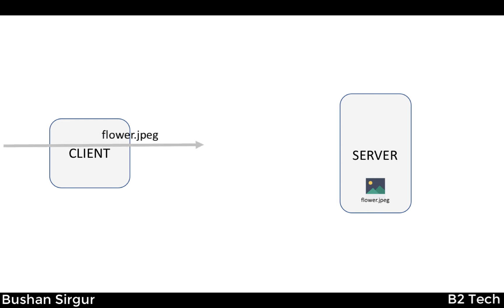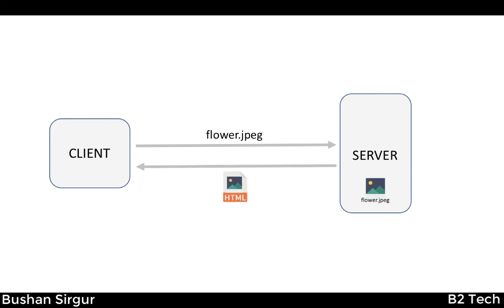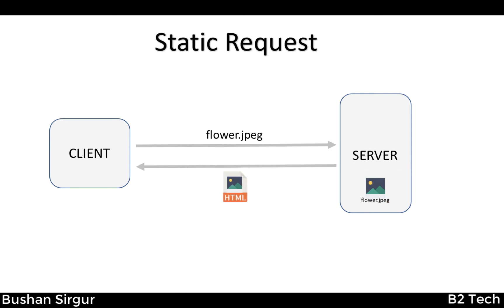Assume that there is a client and a server. The client sends a request to a server for a JPG image. The server takes that request, processes it, and finds the appropriate resource in its hard drive and includes that resource in an HTML web page and sends it back to the client as a response.